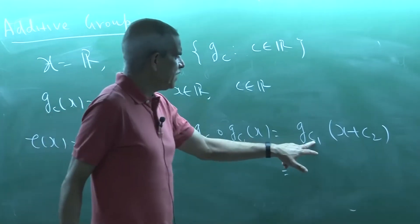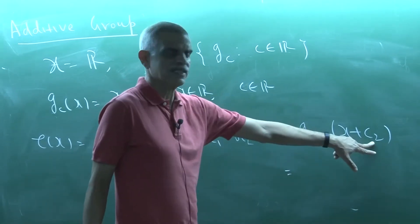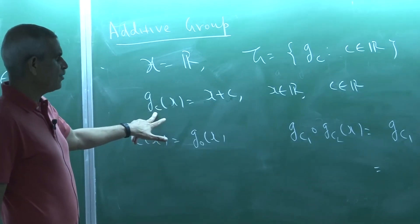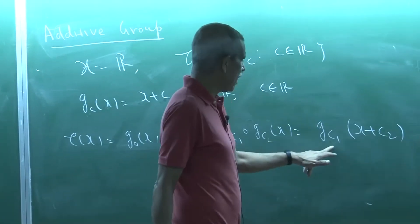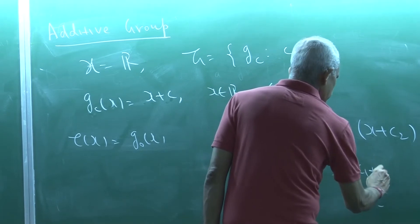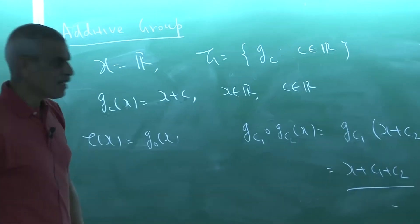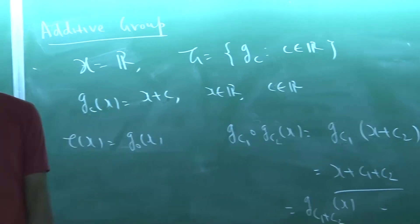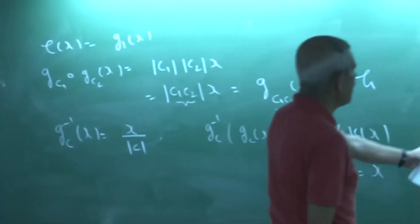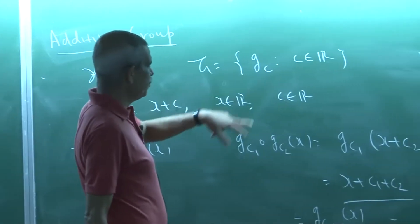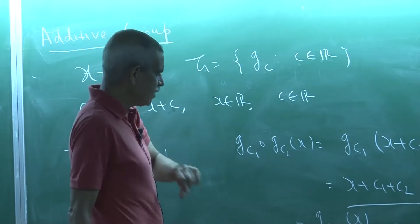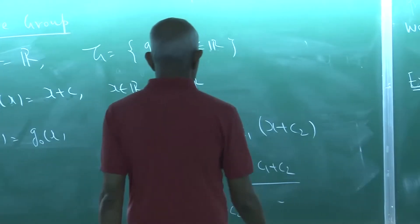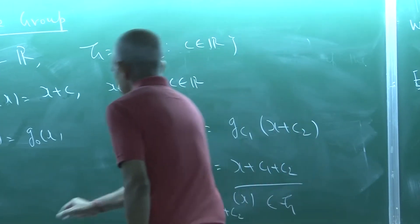For composition: G_{c₁} ∘ G_{c₂}(x) = G_{c₁}(x + c₂) = x + c₂ + c₁ = x + (c₁ + c₂) = G_{c₁+c₂}(x). Since c₁ and c₂ are both in ℝ, c₁ + c₂ is also in ℝ, so this clearly belongs to G. So the additive group is closed under composition.